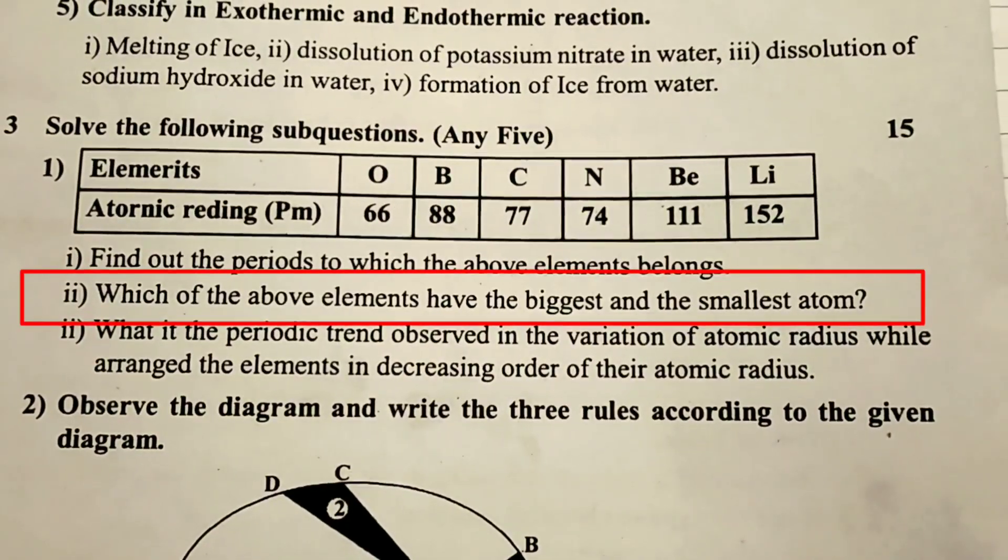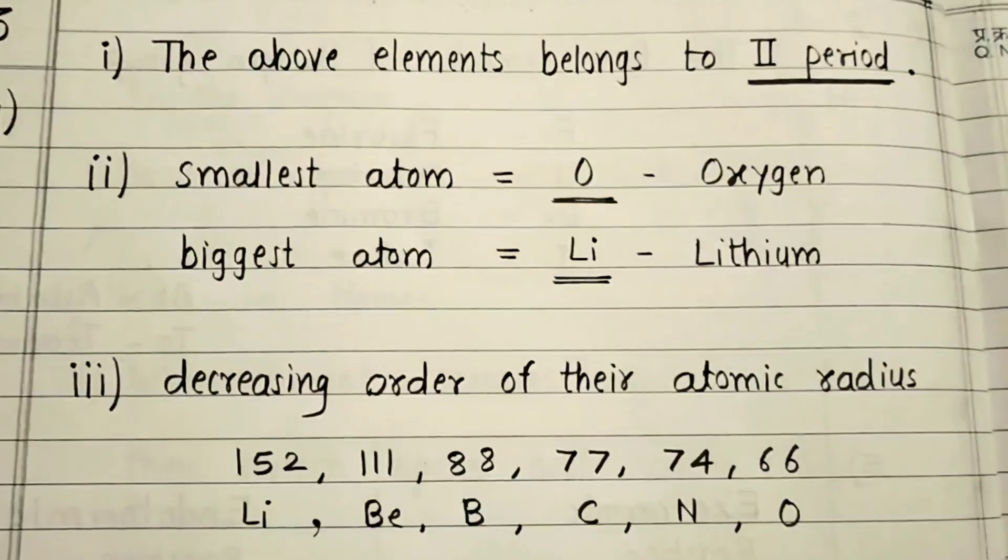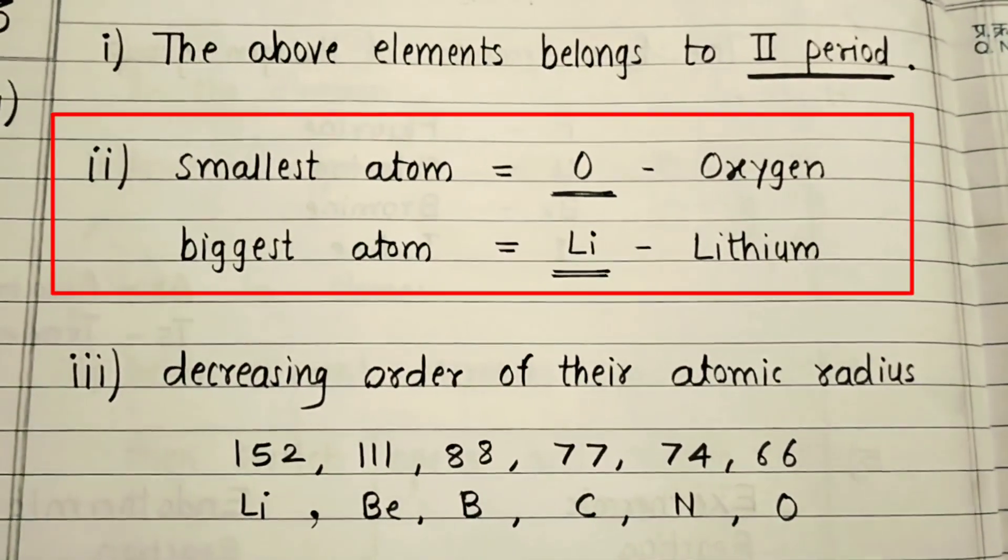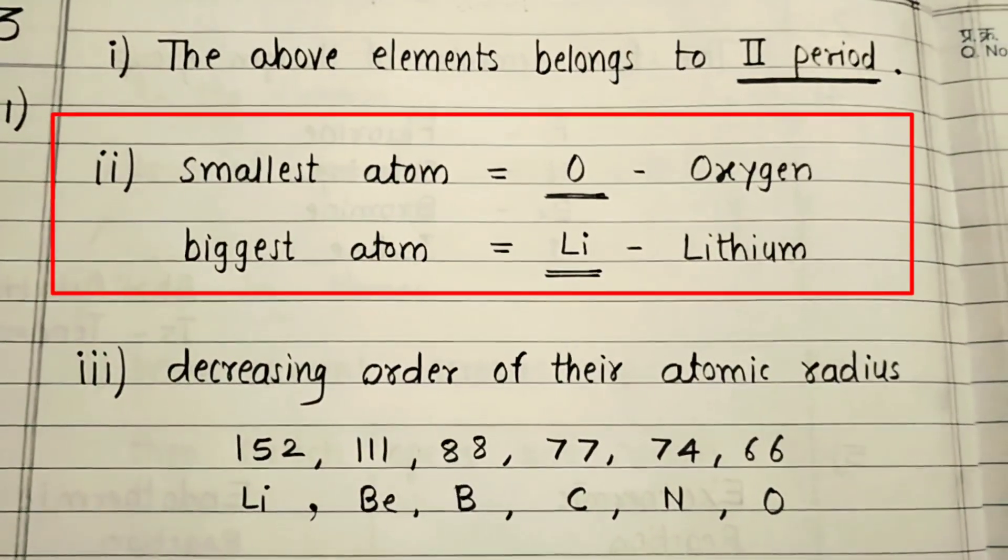Second question: Which of the above elements have the biggest and the smallest atom? Smallest atom is O, Oxygen. Biggest atom is Li, Lithium.